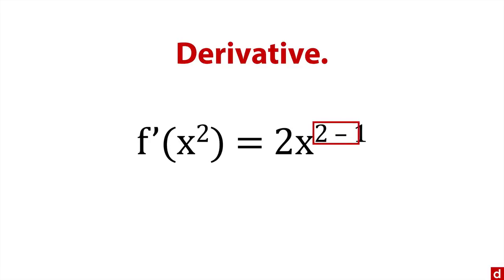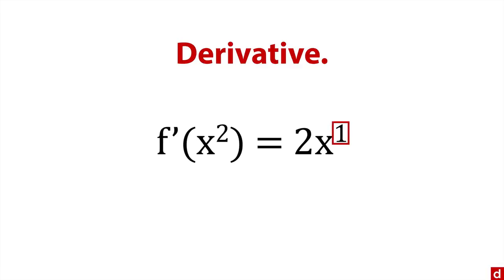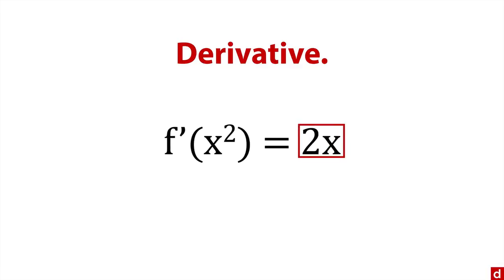Then we can do a little bit of subtraction, two minus one is one. And truthfully, you can just ignore that and you get 2x. That is the derivative. So what we have here is the derivative of x squared is 2x.